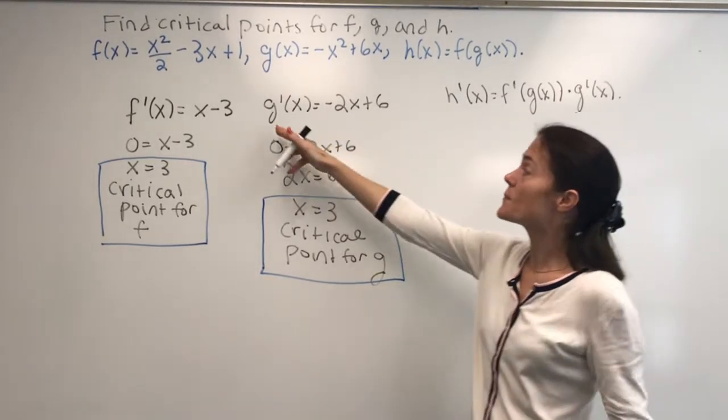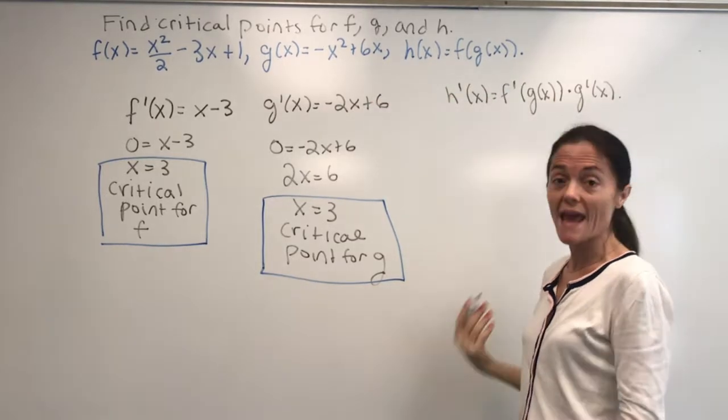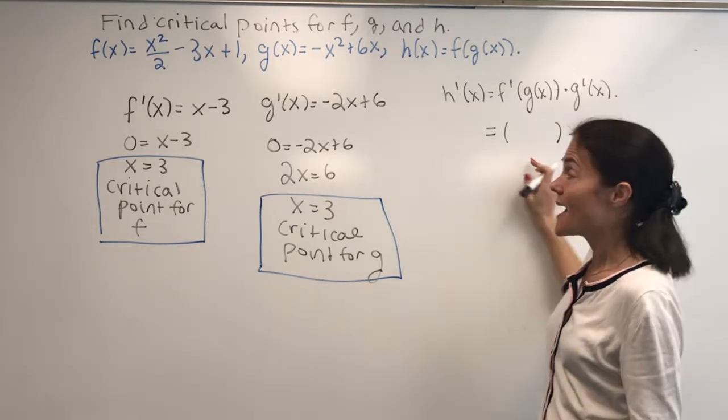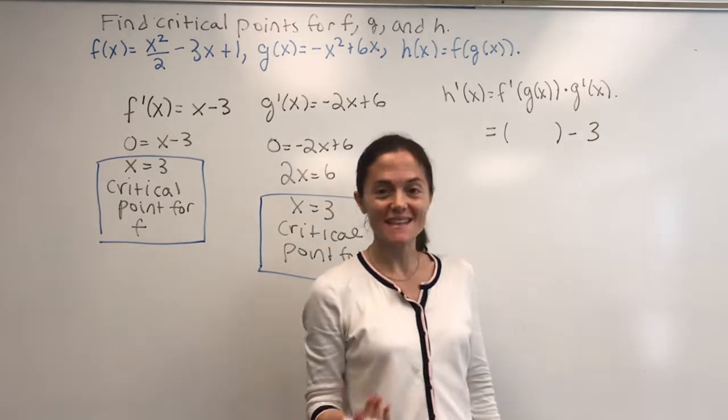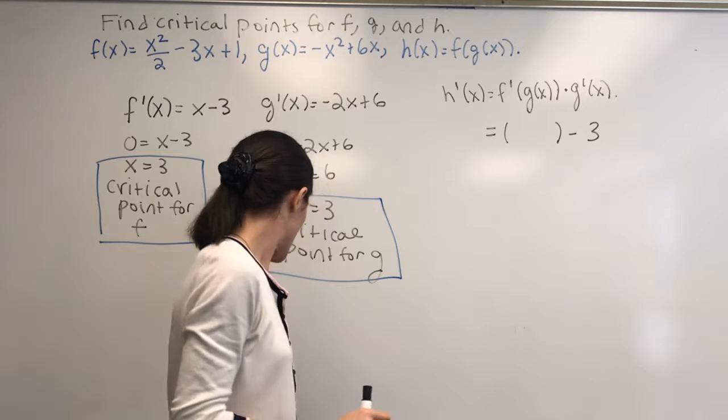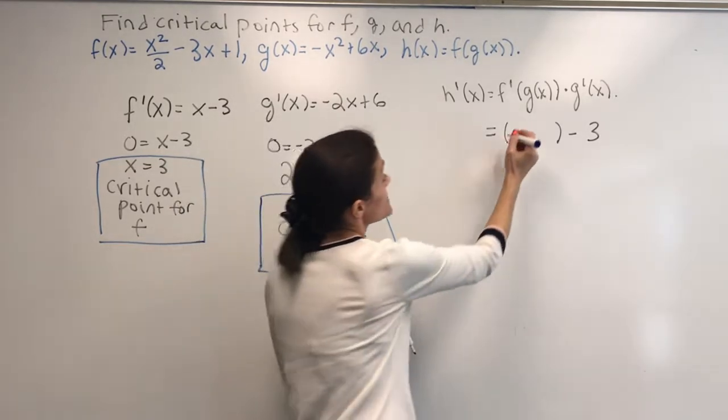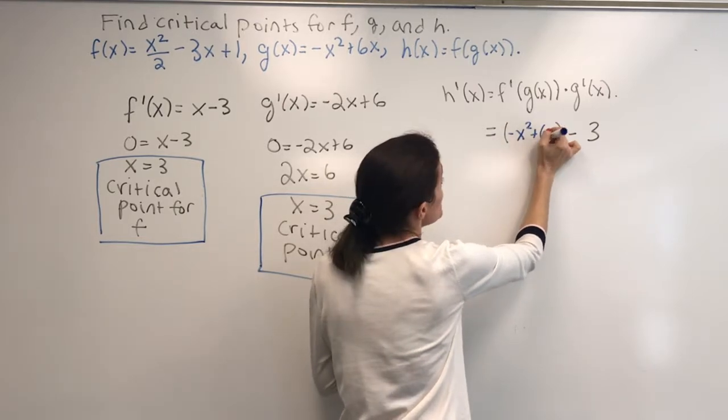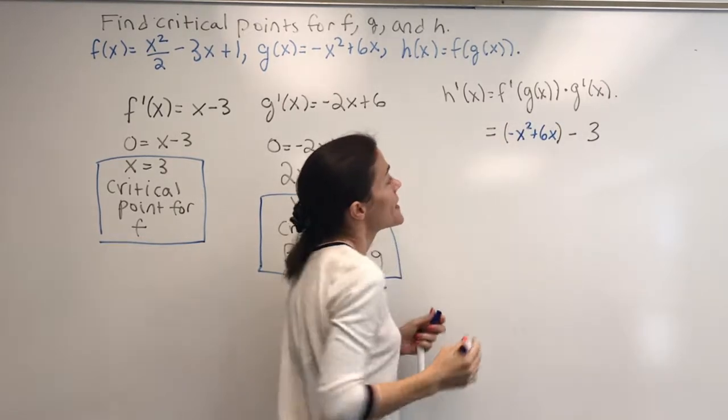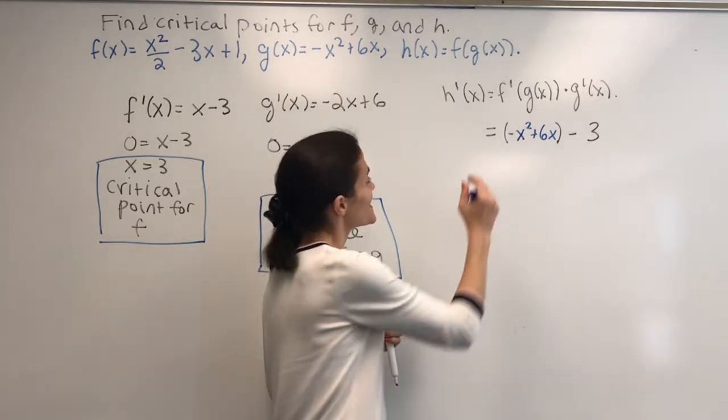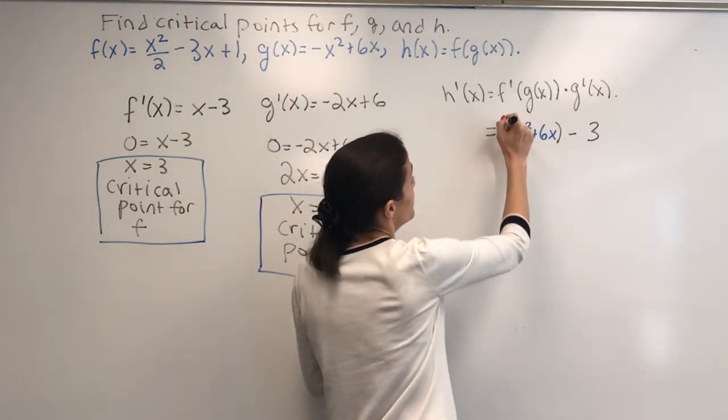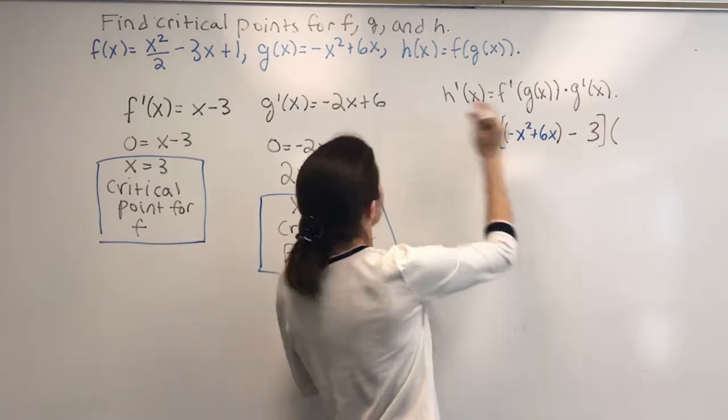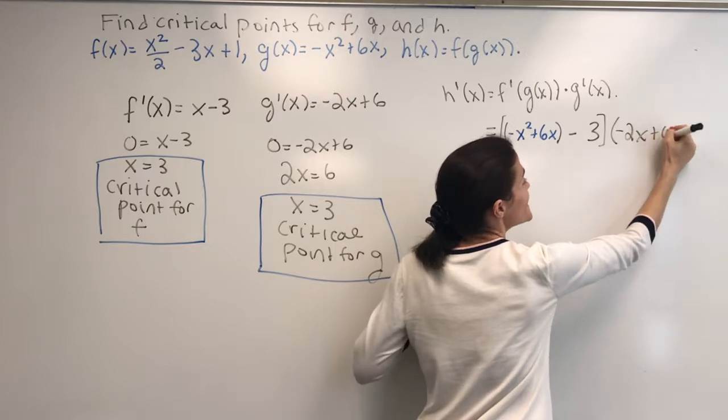but since I have the pieces, I won't actually write out what h is. I have x minus 3, and inside, I put the entire inside function. Maybe I will do that in blue. So inside, this is the composition, minus x squared plus 6x. And then, I multiply this by g prime, so times the derivative of g minus 2x plus 6.